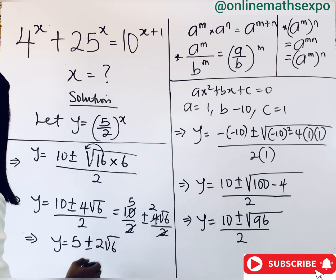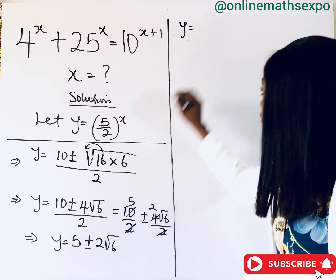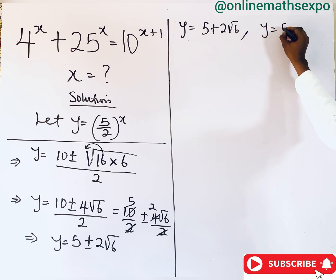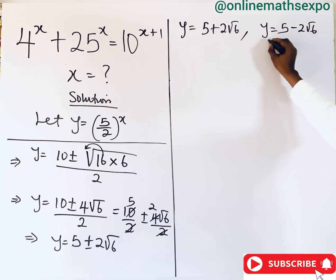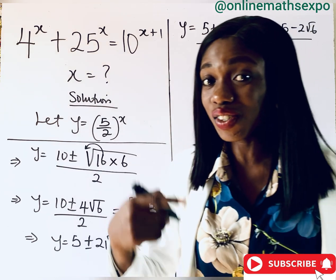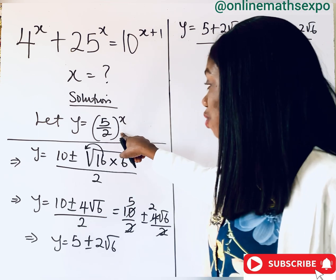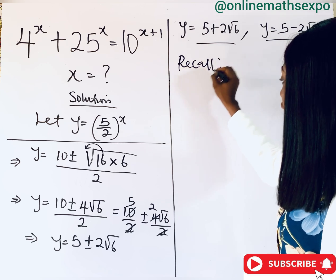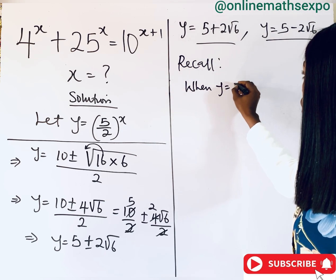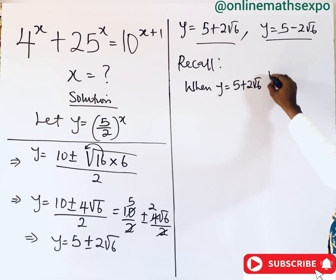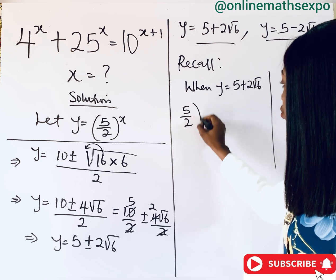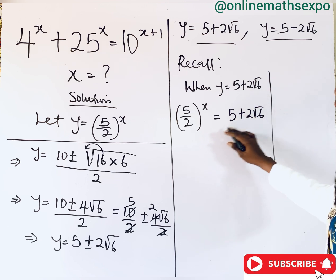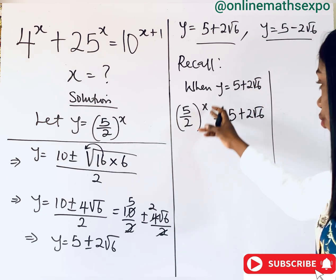So we can split this to get y equals 5 plus 2 root 6, and y equals 5 minus 2 root 6. These are the two values of y. But remember, the question is not on y — it's on x. You have to remember that we made the statement that y equals 5 over 2 raised to the power of x. So when y equals 5 plus 2 root 6, we have 5 over 2 raised to the power of x is equal to 5 plus 2 root 6. At this point, you need to take the log of both sides to help you find x.